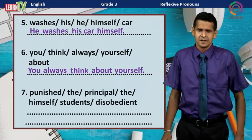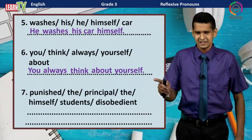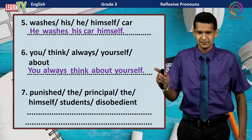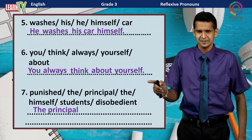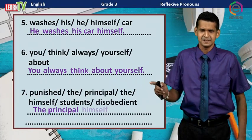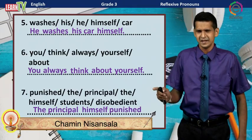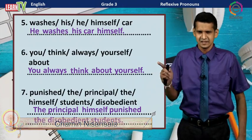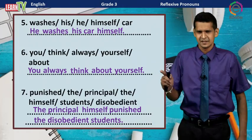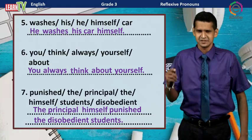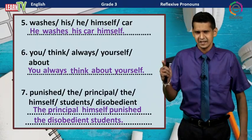Number seven: The doer is 'the principal,' the verb is 'punished.' The sentence is: The principal himself punished the disobedient students. We can also write: The principal punished the disobedient students himself. We can change the position of the reflexive pronoun because it is used to show emphasis.